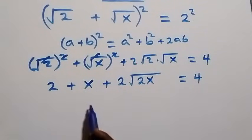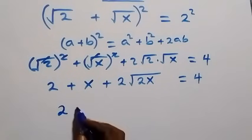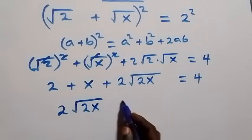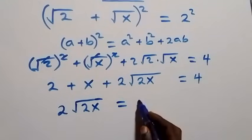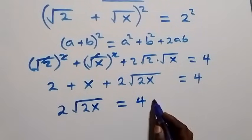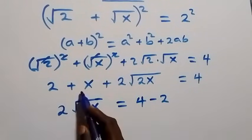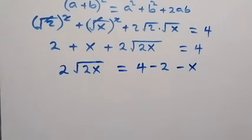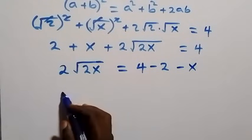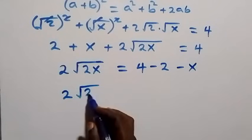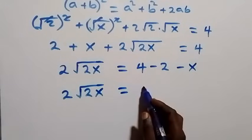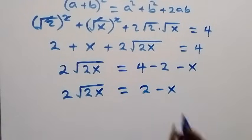From here we can take 2 and x to the other side, and we are left with 2 root 2x, which equals 4 minus 2 minus x. So 2 root 2x equals 2 minus x.